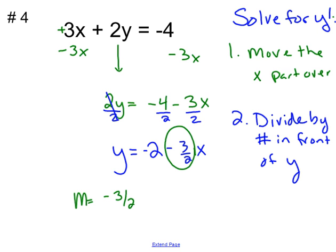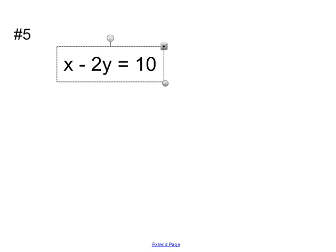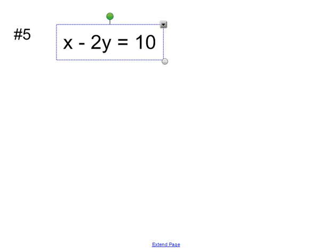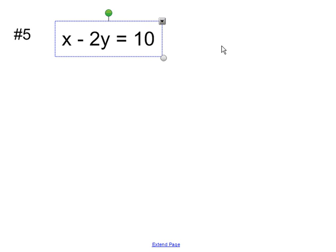And my y-intercept is 0, negative 2. Let's look at another one. This is problem number 5. x minus 2y equals 10.